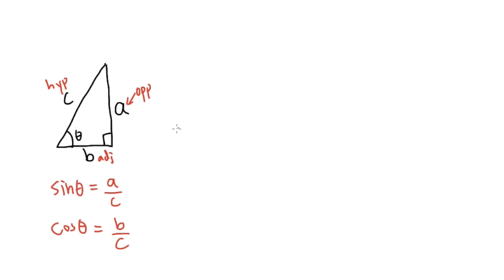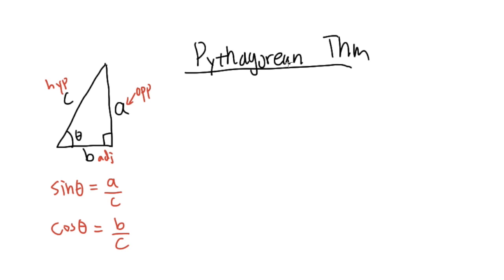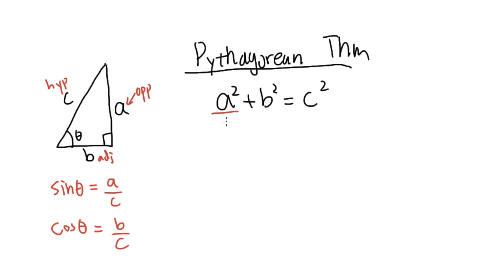We also need to borrow one of the most famous formulas from geometry — the Pythagorean theorem. This says that when we have a right triangle, we must have a squared plus b squared equal to c squared, where c is the hypotenuse. The sum of the squares of the two legs equals the square of the hypotenuse. Now I'm going to take this equation and divide everything by c squared.